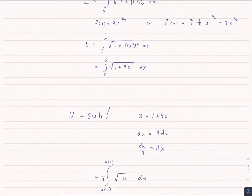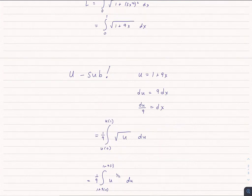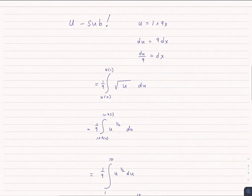So I end up with 1/9th, the integral from 0 plugged into u to 1 plugged into u, the square root u du. I tend to rewrite square root of u as u to the 1 half, otherwise I make mistakes when I'm trying to integrate. And if I go ahead and plug 0 and 1 into my u, I find that the lower limit would be 1 plus 9 times 0, and the upper limit 1 plus 9 times 1. So I have this.